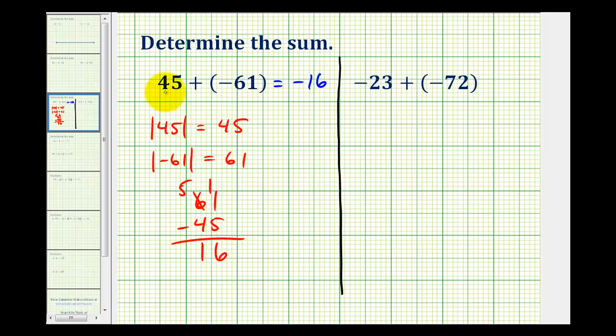So again, notice when summing integers with different signs, we subtract their absolute values. Our second example is a sum with integers of the same sign, so in this case, we're going to add the absolute values.